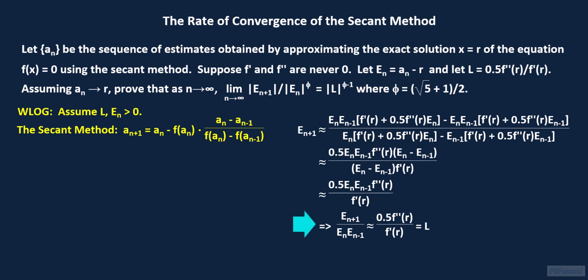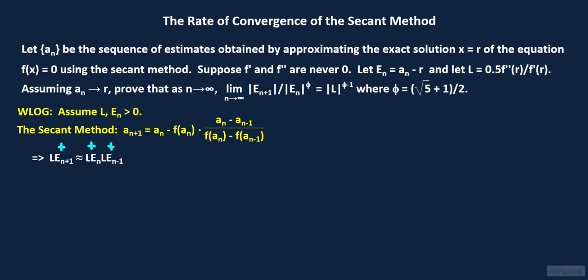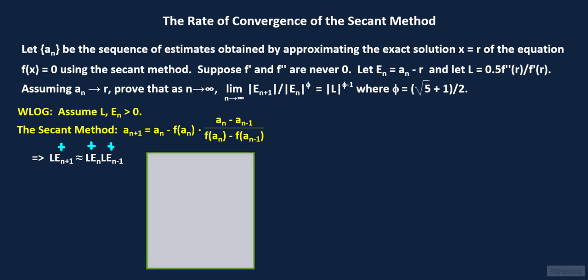On one side of this equation, we multiply and divide by l and then cross multiply to get l times e sub n plus 1 is approximately l times e sub n times l times e sub n minus 1. Even without assuming that both l and e sub n are greater than 0, one can show that for large values of n, l times e sub n plus 1, l times e sub n, and l times e sub n minus 1 are greater than 0 with appropriately chosen starting values for a sub n. There is a video that we had previously posted on the secant method. In that video, this fact was a consequence of the derivation for the case where both f prime and f double prime are positive. The video, however, does not mention the three other cases, but they can be dealt with in a similar fashion.